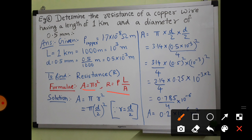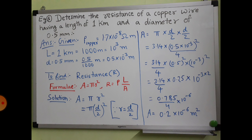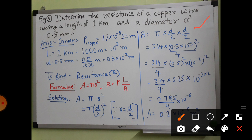We will use two formulae: Area = πr² and then R = ρl/A. We use πr² because the cross-section of any wire is circular, so we use the area of a circle. In the formula πr², r is nothing but d/2 (diameter divided by 2), so instead of r² you can write (d/2)². Diameter is given, so instead of r we take d/2.